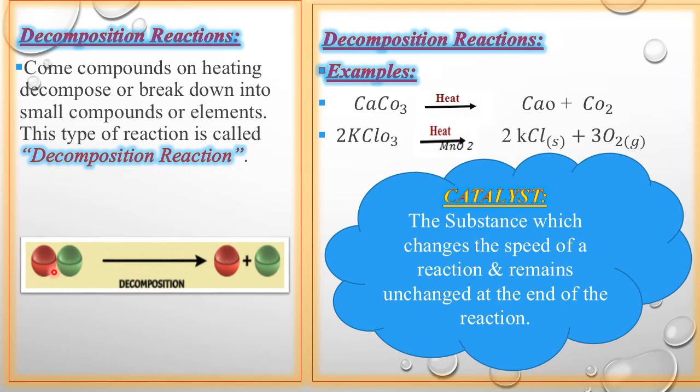Students, decomposition reactions are those reactions in which a compound breaks down to produce two or more simpler substances. In the book, some components on heating decompose or break down into small components or elements and this type of reaction is called decomposition reaction. We need heat and energy to break. After breaking we have a number of simpler components or elements. This type of reaction is called decomposition reaction.